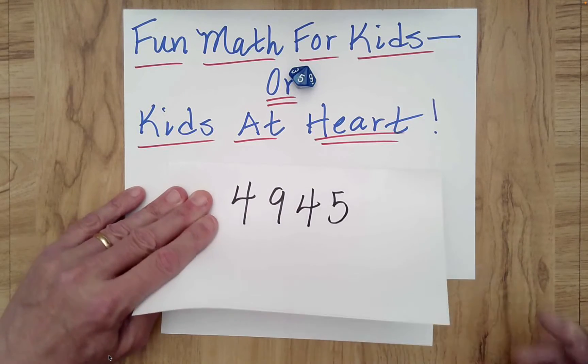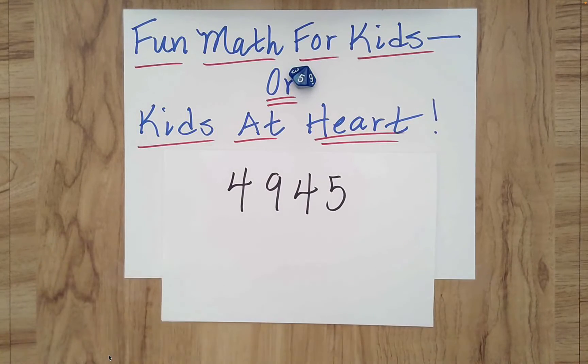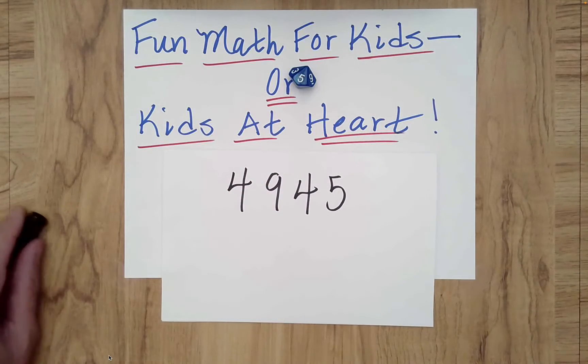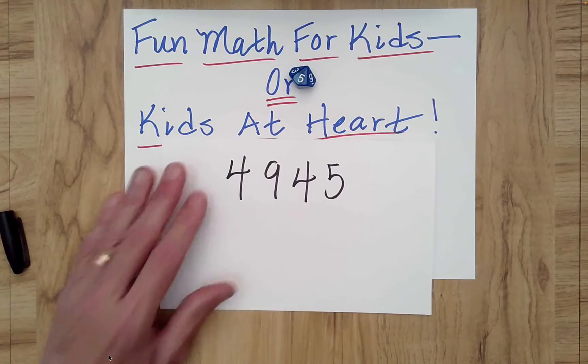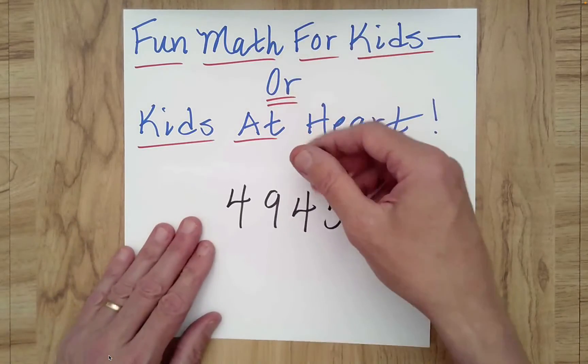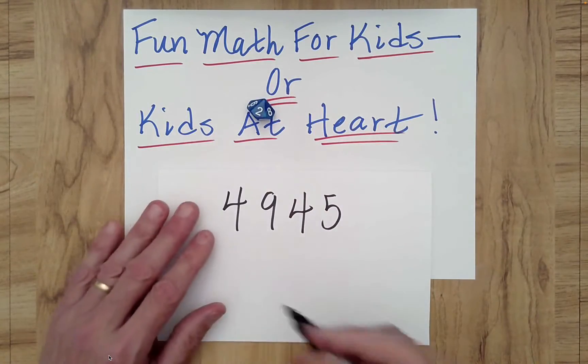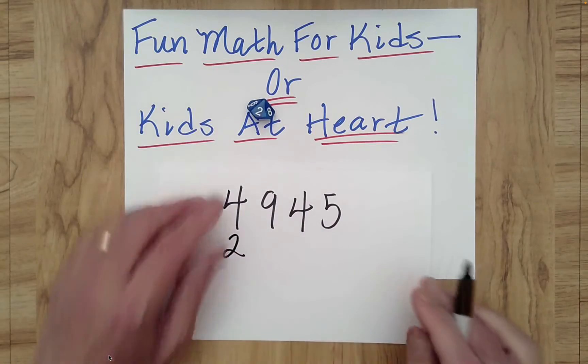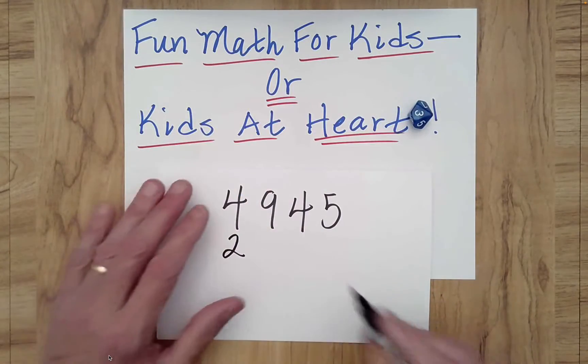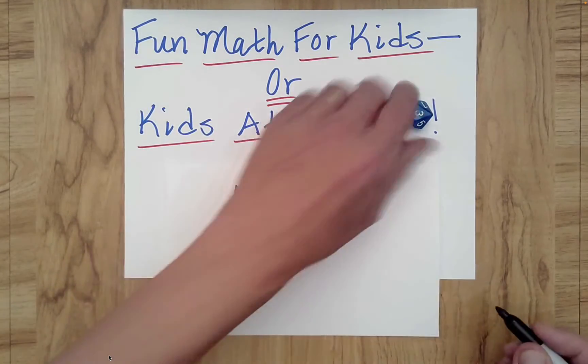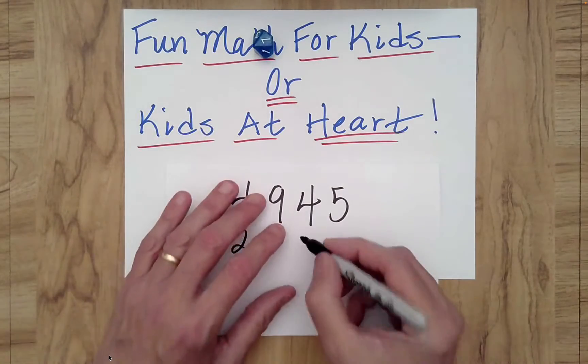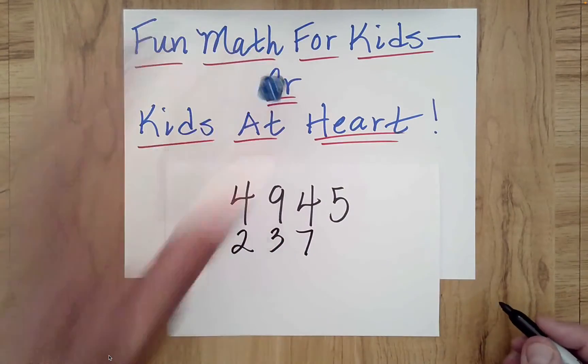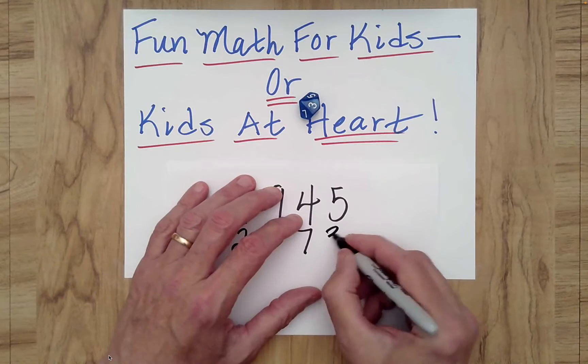Okay, I think that's a good prediction right there. So now what I need you to do is go ahead and choose a second four-digit number. Okay, so we'll leave it to the die here. So a two and a three, a seven, and a three.